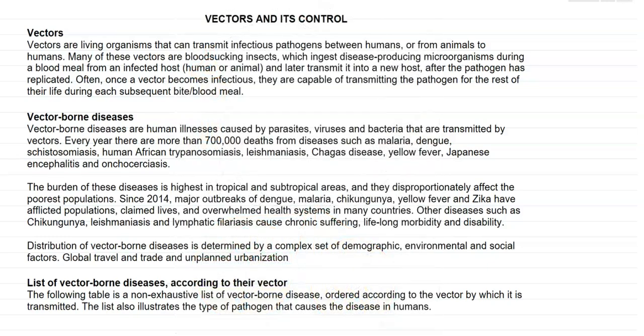Once a vector becomes infectious, the pathogen can stay inside the vector host and be transmitted to other organisms throughout their life cycle, especially during every subsequent bite or blood feeding. Next we look at the details of the vector-borne diseases that are commonly caused in humans.